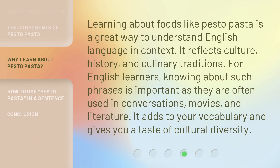Learning about foods like pesto pasta is a great way to understand English language in context. It reflects culture, history, and culinary traditions. For English learners, knowing about such phrases is important as they are often used in conversations, movies, and literature. It adds to your vocabulary and gives you a taste of cultural diversity.